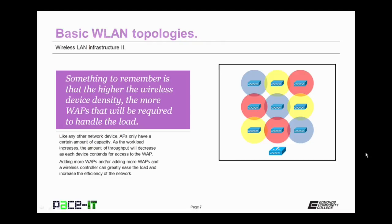Like any other network device, access points only have a certain amount of capacity. As the workload increases, the amount of throughput will decrease as each device contends for access to that wireless access point. Adding more WAPs and wireless controllers can greatly ease the load and increase the efficiency of the network.